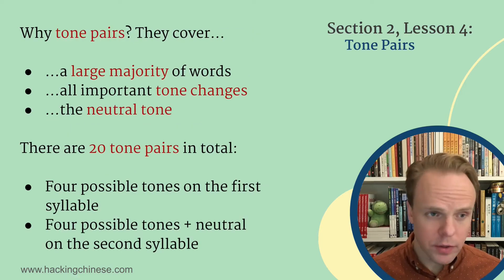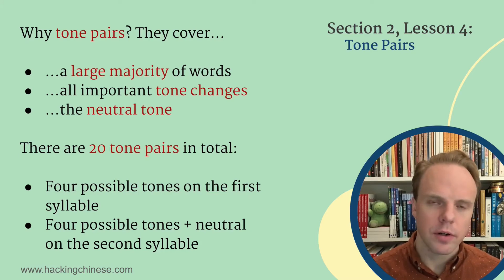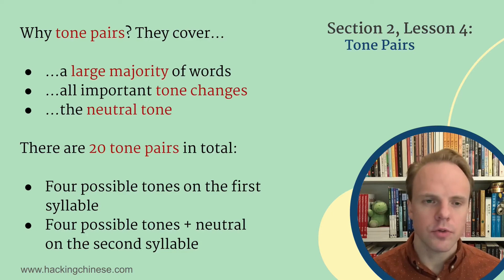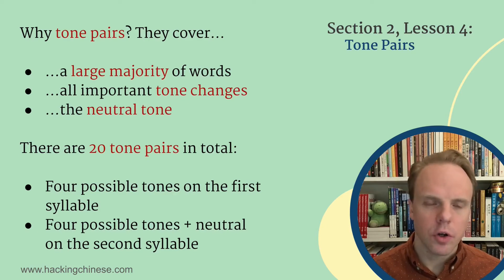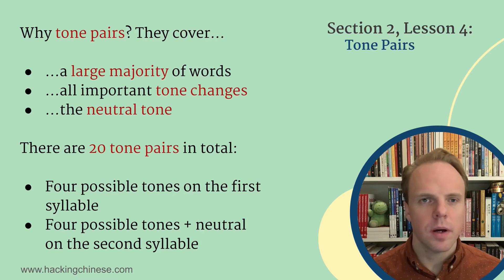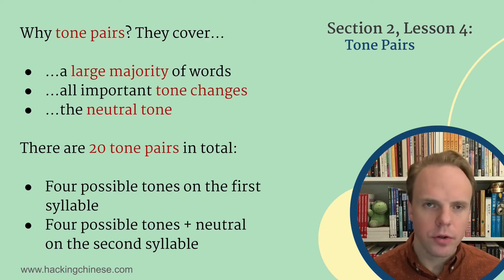So why tone pairs? Well, they cover a large majority of words you actually need to say, because most words — as I have said earlier in this course — are actually two syllables long, and that means that tone pairs cover what you need to learn. It also covers the most important tone changes. So most of the changes are covered in these things. We talked about bō and yī, for example. We talked about the third tone, and so on. All these things are covered.